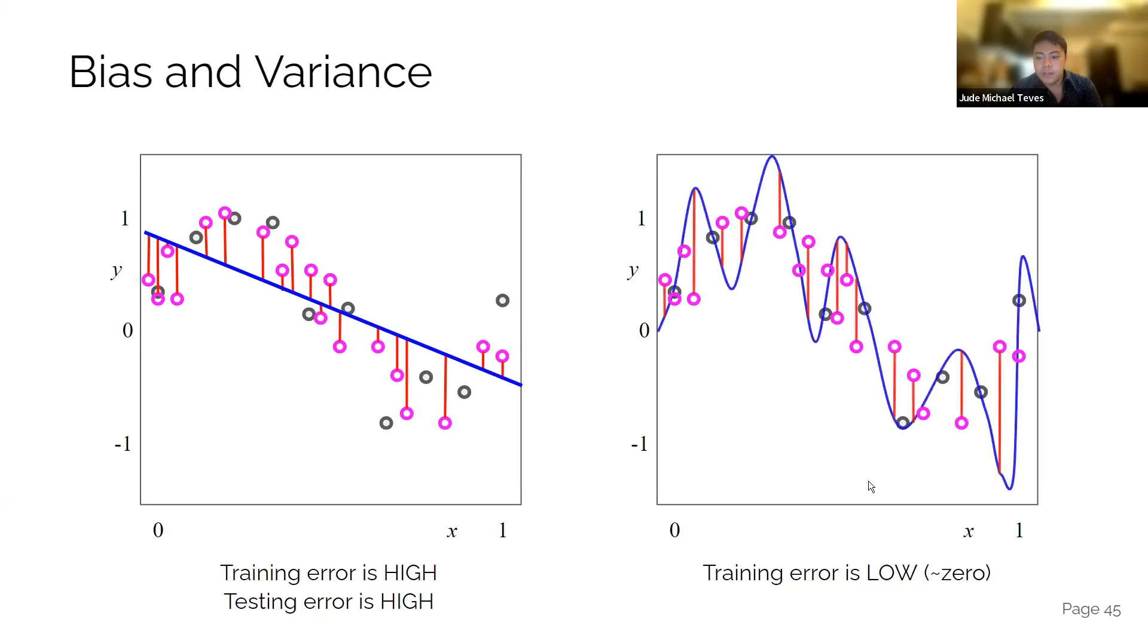For this one, the testing error is high because this is overfitting. You basically force your way to fitting the data points in the train set, but you can't really generalize with the whole data set when you now use your test set.